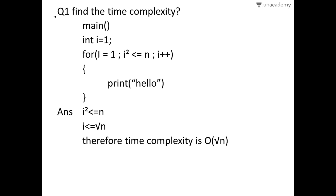In our first example, there is a main function with a for loop running from i equals 1 while i squared is less than or equal to n. The condition is a little different from the normal one. To simplify, we take the square to the other side, so it becomes i less than or equal to root n. That's why the time complexity of this algorithm will be O(√n).